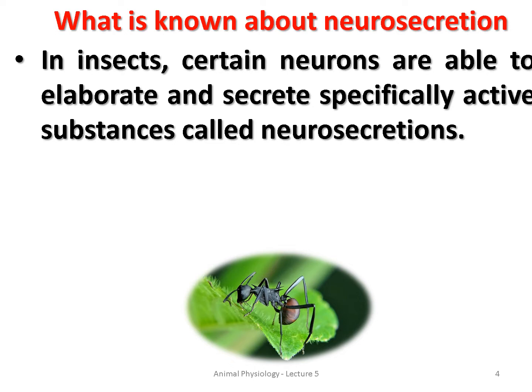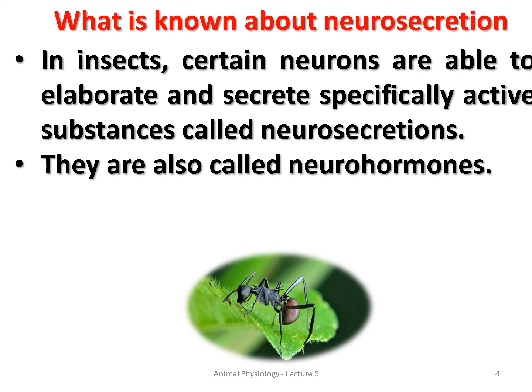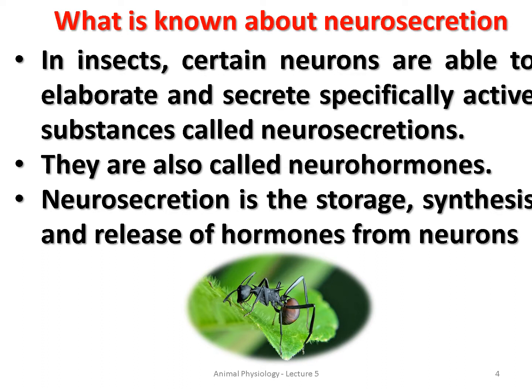In insects, certain neurons are able to elaborate and secrete specifically active substances called neurosecretions. Only neurons are able to secrete these active substances, and that system is called the neurosecretory system. They are also called neurohormones — referring to the storage, synthesis, and release of hormones from neurons.